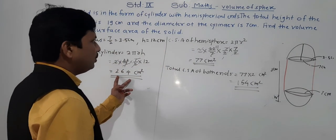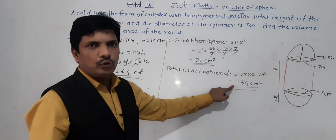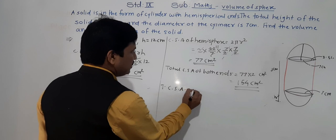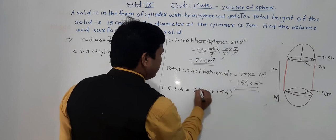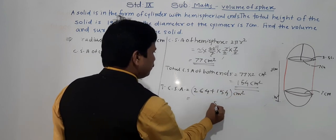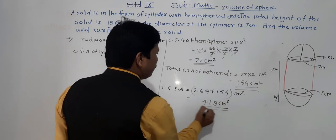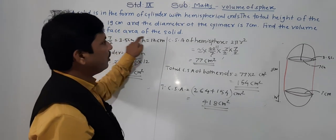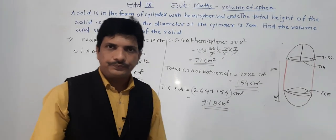Total curved surface area = CSA of cylinder + CSA of both hemispherical ends = 264 + 154 = 418 cm². So the total surface area of the solid is 418 cm².